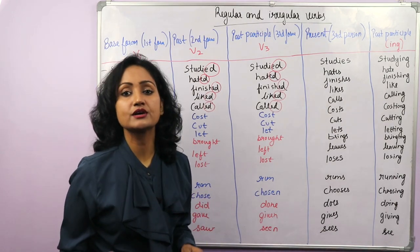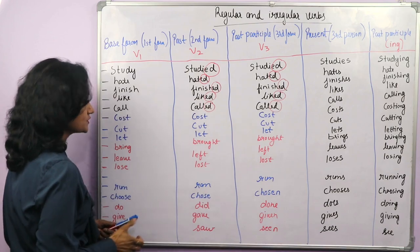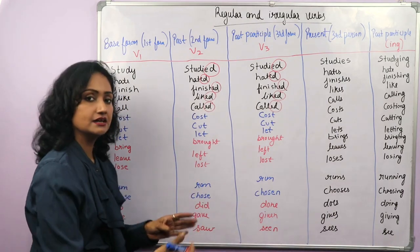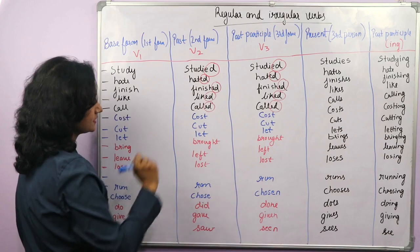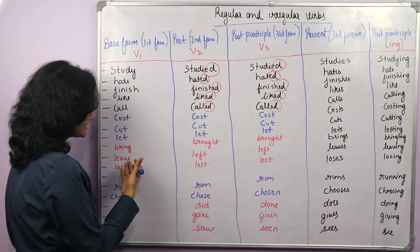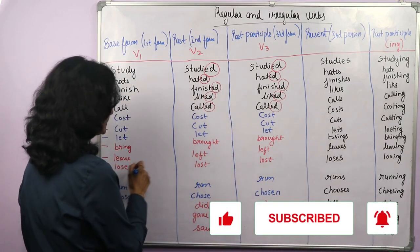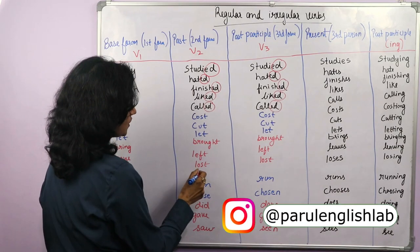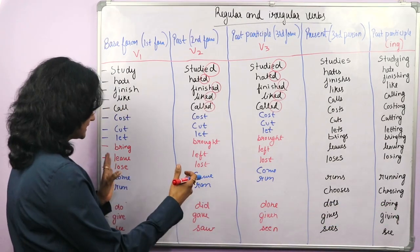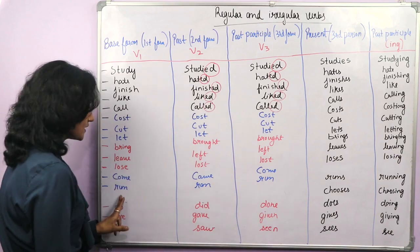This is not the case with irregular verbs — they are of different types. You can group them into four categories. First: cost, cost, cost — all three forms V1, V2, V3 are the same. Second: bring, brought, brought; leave, left, left; lose, lost, lost — where V2 and V3 are the same. Third: come, came, come; run, ran, run — where V1 and V3 are the same.